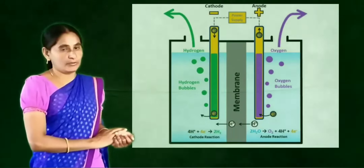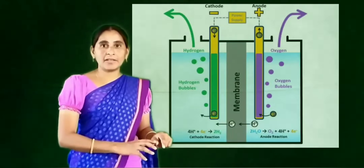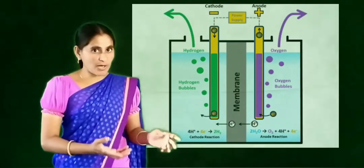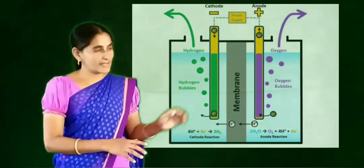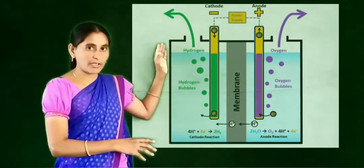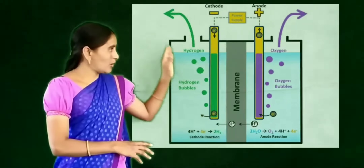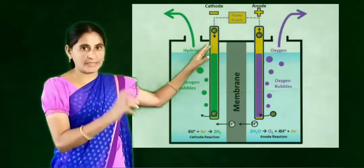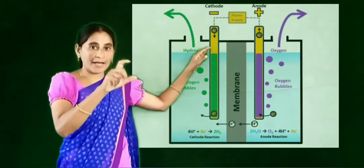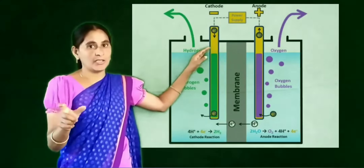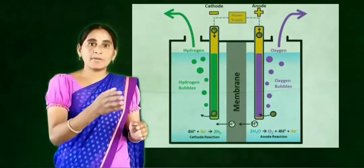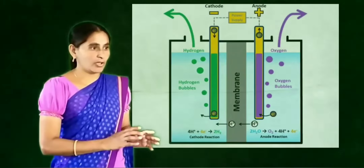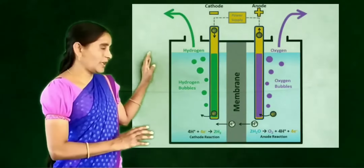Some elements in the periodic table are able to lose electrons, some are ready to gain electrons. This losing and gaining involves bond formation. Such bond formations are of two types — ionic bond and covalent bond. In the name itself we can identify: ionic bond means a bond which forms between two ions is known as ionic bond.